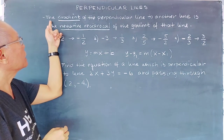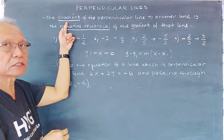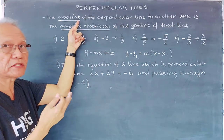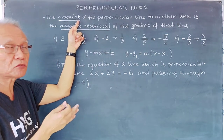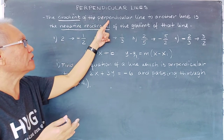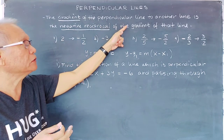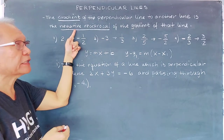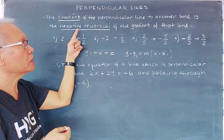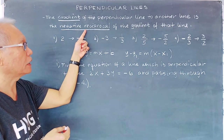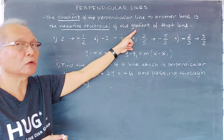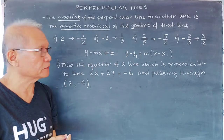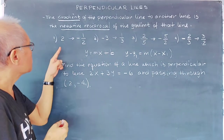The gradient or slope — they are both the same — of the perpendicular line to another line is the negative reciprocal of the slope or gradient of that line.